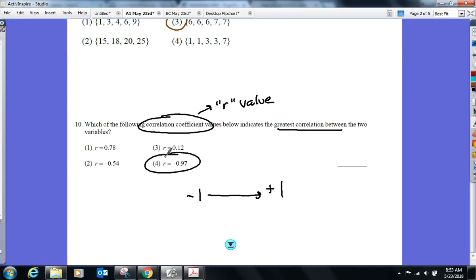Don't cross it out because it's negative. All right. Negative and positive. Positive just means one goes up, the other goes up. Negative means one goes up, the other goes down. Okay. The closer they are to these two numbers, the stronger they are. Tom.